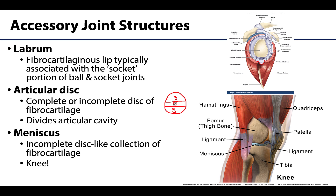Menisci are shallow and incomplete pads of fibrocartilage that often appear in a crescent moon shape, most commonly associated with the knee joint. They play a role in absorbing shock and pressure and very slightly improve the fit between the bones. There are two menisci associated with the knee.